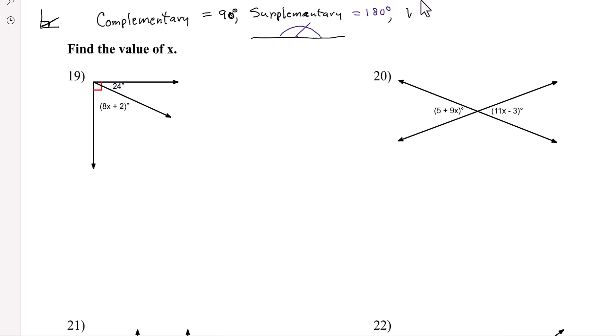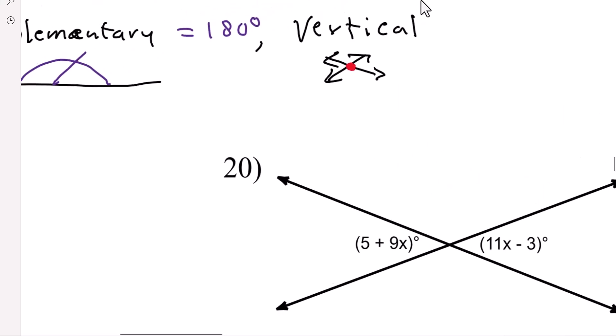Then you've got vertical angles. Every time you draw any type of x, and they cross right there at a vertex, so right there, well look at what we have, we have those opposite angles and those opposite angles. Those are called vertical angles, and they're congruent.